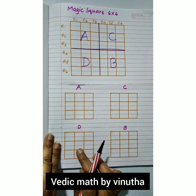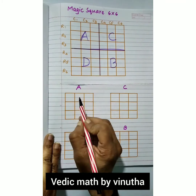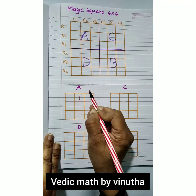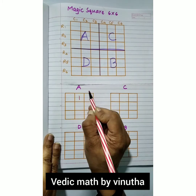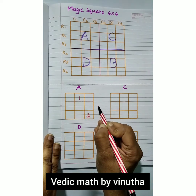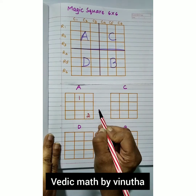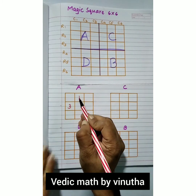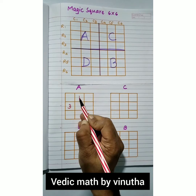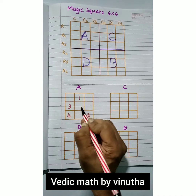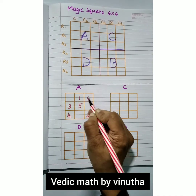We select the first row middle box, start with 1, and move diagonally. If there is no box available, go to the column end and write 2. Again move diagonally for 3, but if no box is available go to the row end and write 3. Move diagonally again, but if this box is already filled, go just right below it — that is 4.